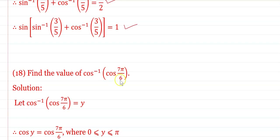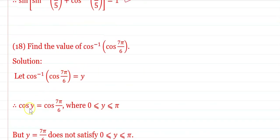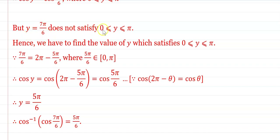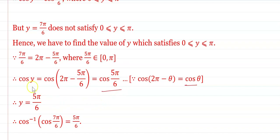Find the value of cos⁻¹(cos(7π/6)). Let cos y = cos(7π/6), where y ∈ [0, π]. Since 7π/6 ∉ [0, π], rewrite: 7π/6 = 2π − 5π/6, and since cos(2π − θ) = cos θ, we get cos(7π/6) = cos(5π/6). Since 5π/6 ∈ [0, π], therefore cos⁻¹(cos(7π/6)) = 5π/6.